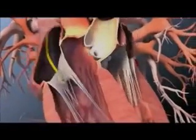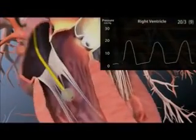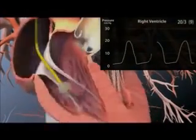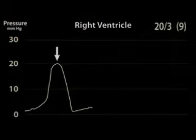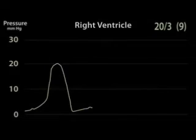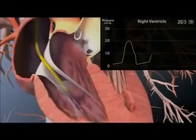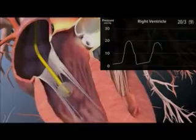Advance the catheter another 5–10 cm until a right ventricular waveform is transduced. This waveform is notable for a swift upstroke and downstroke representing ventricular contraction and relaxation, as well as a slower upstroke representing passive ventricular filling followed by atrial contraction. Instruct your assistant to write down the systolic and diastolic right ventricular pressures.